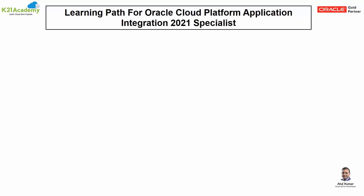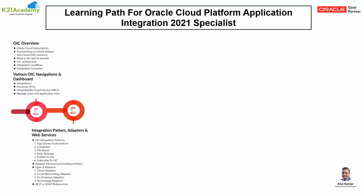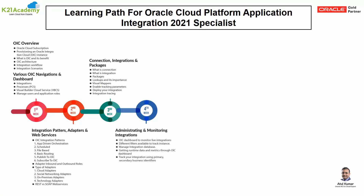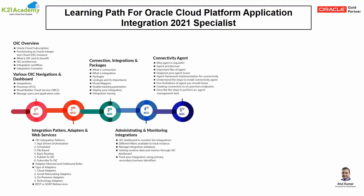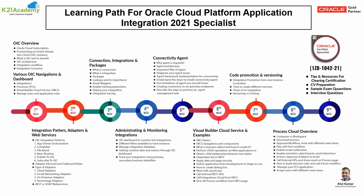That was a clip on connectivity agent overview in Oracle Integration Cloud. We have put together everything about the certification, including basic concepts: OIC overview, navigation and dashboards, integration patterns, adapters and web services, connections, integrations and packages, administering and monitoring integrations, connectivity agents, Visual Builder Cloud Service, code promotion and versioning, and Process Cloud overview, including tips and resources for clearing the certification exam. This is a nine-week roadmap taking you from basics to advanced level.